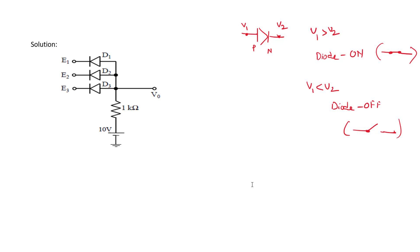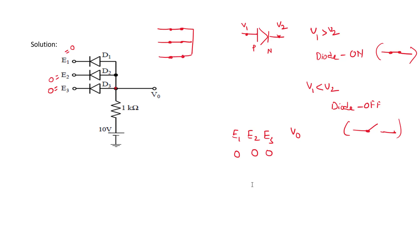Coming to this problem: when all inputs E1, E2, E3 are at logic 0, a positive voltage is applied at the P side of all diodes, so all diodes are on. When all diodes are on, they act as short circuits, connecting output V0 directly to ground through all three input terminals. Therefore, V0 equals 0, and the output is logic 0.